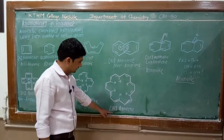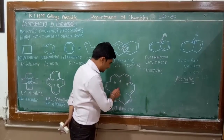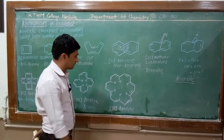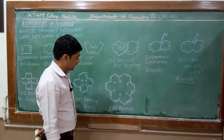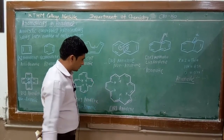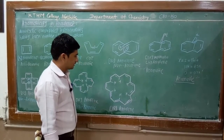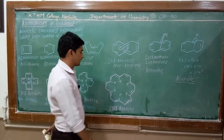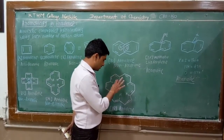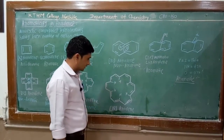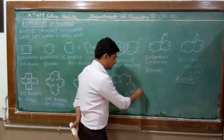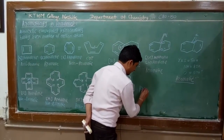In 18-annulin, the inner cavity is very large. Therefore the 6 inner hydrogen atoms are apart from each other, there is no transannular effect, and this is a planar system. So this is cyclic, planar, fully conjugated, and containing 18 pi electrons. An 18 pi electron system is aromatic, so therefore 18-annulin is aromatic.